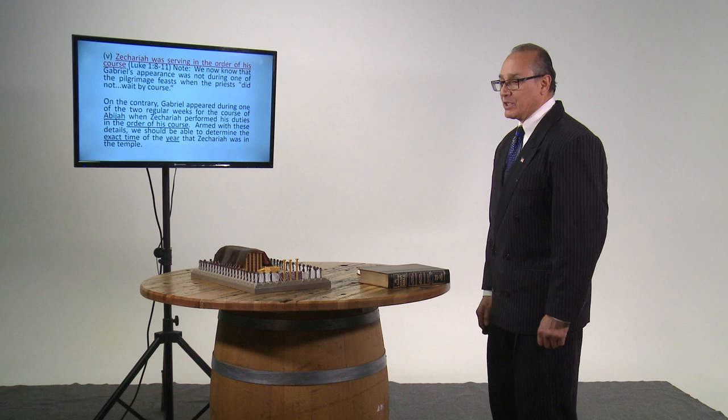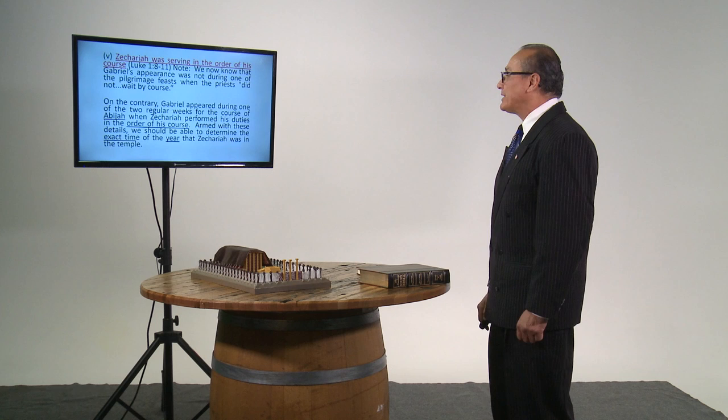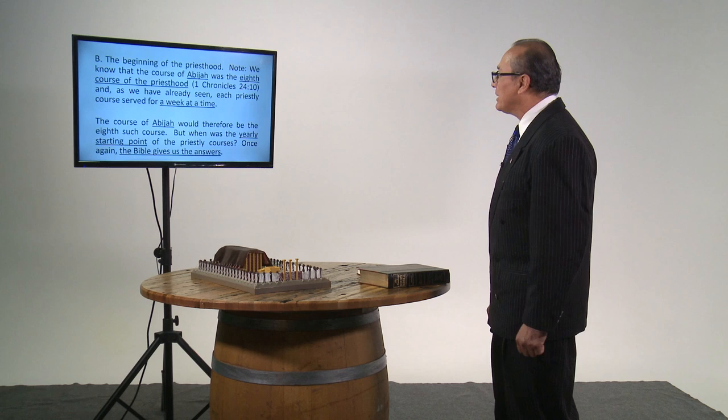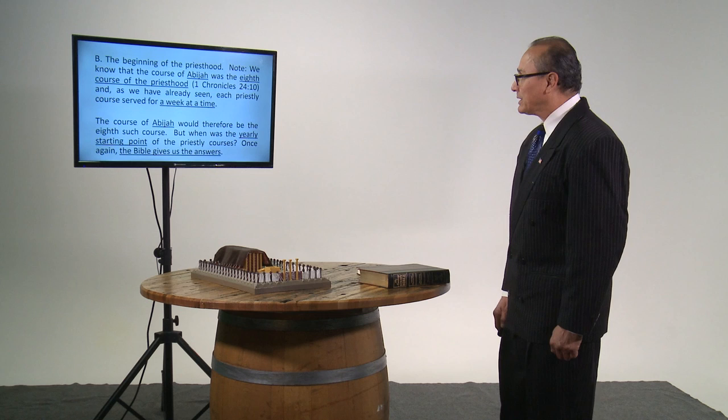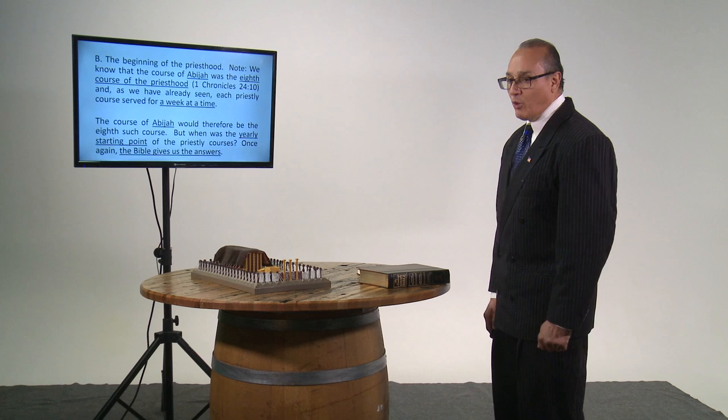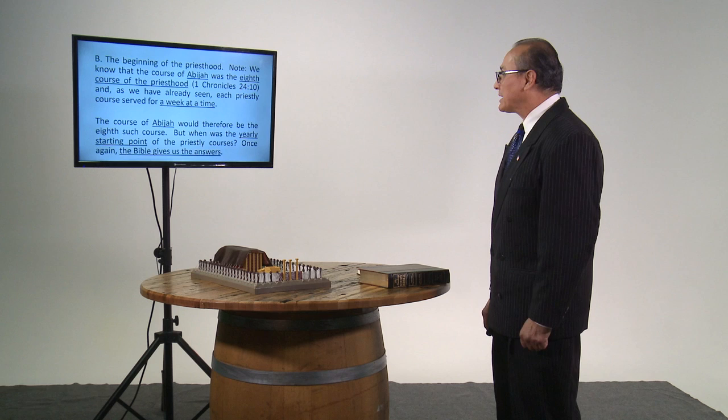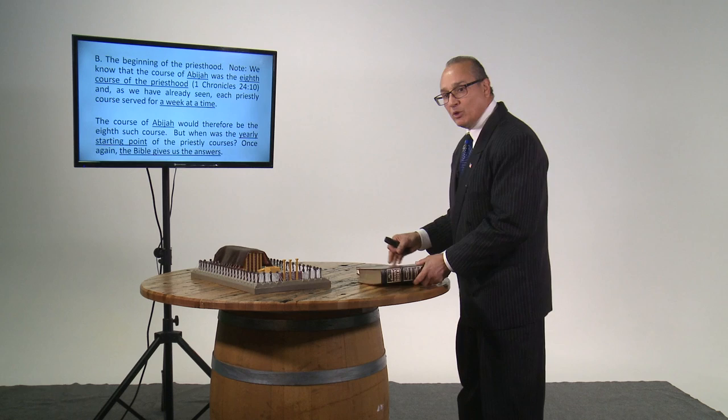Zechariah was serving in the order of his course, Luke 1:8-11. We now know that Gabriel's appearance was not during one of the pilgrimage feasts when the priests did not wait by course. On the contrary, Gabriel appeared during one of the two regular weeks for the course of Abijah when Zechariah performed his duties in the order of his course. Armed with these details, ladies and gentlemen, we should be able to determine the exact time of the year that Zechariah was in the temple.